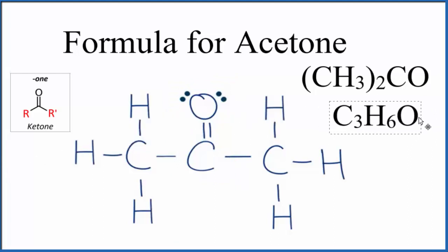Sometimes we just count up the carbons, hydrogens, and oxygens, and you get C3H6O. This has a little more information for us. So that's how you write the formula for acetone.